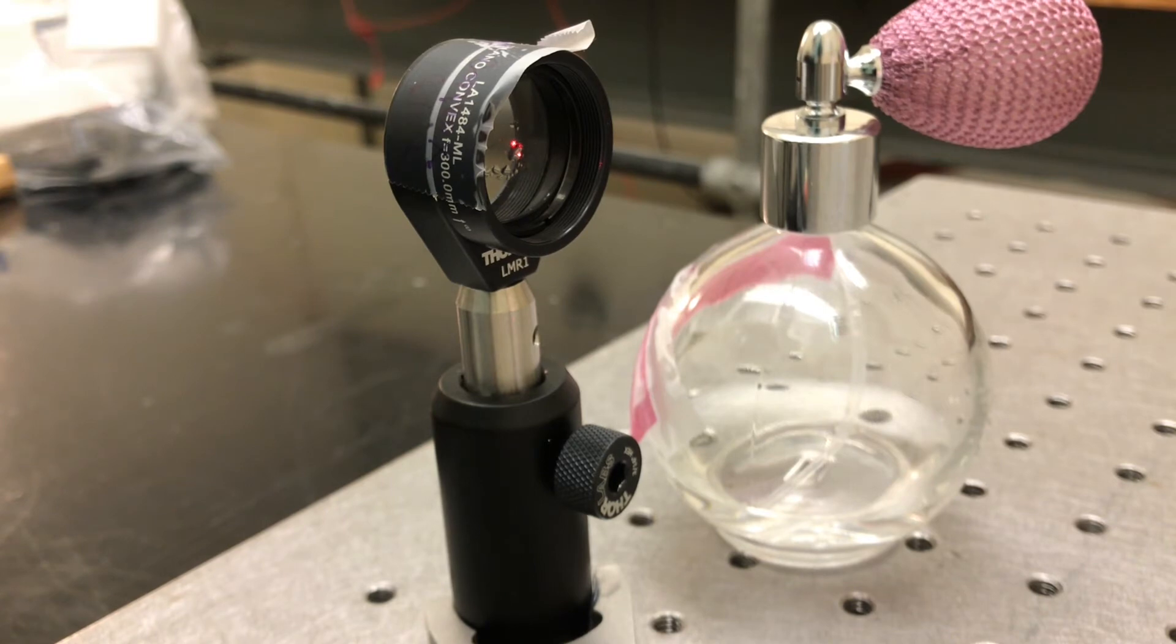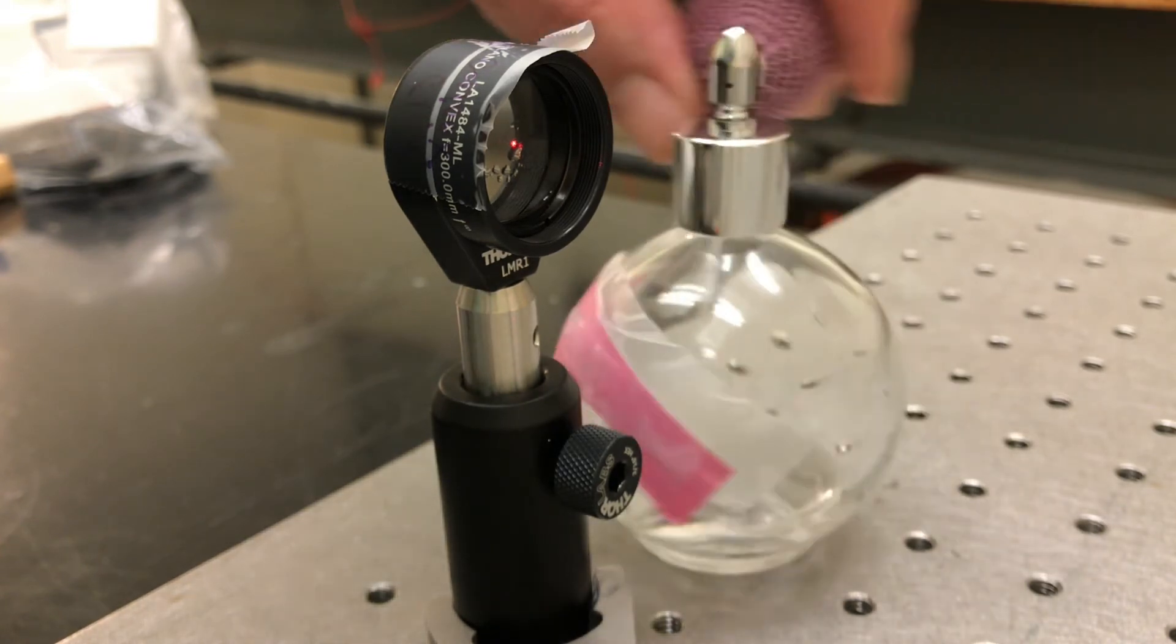But if I squirt alcohol on the rear surface, it's going to index match. The index of refraction of the alcohol is almost the same as water, and so I'll lose most of the reflection from the glass. The light will pass into the alcohol, but now the alcohol will have a really rotten surface to it, it'll be drips and things coming down, and so that reflection won't be normal.